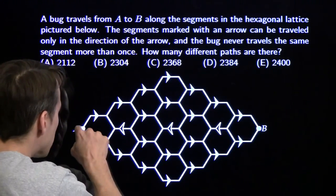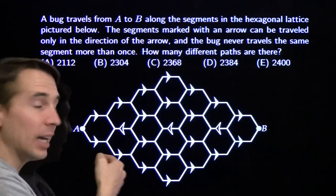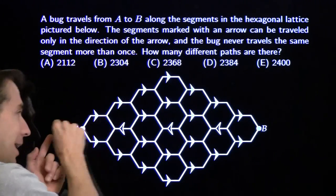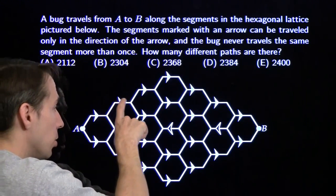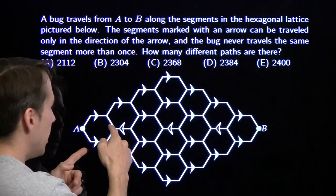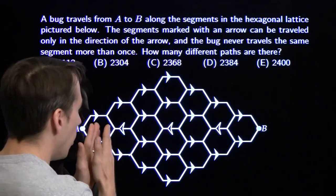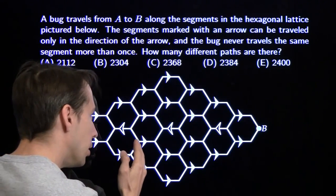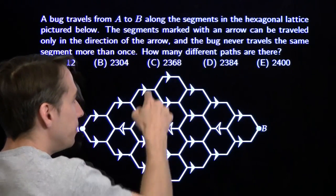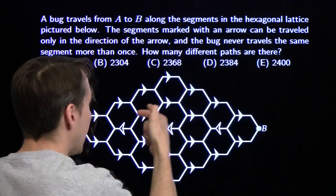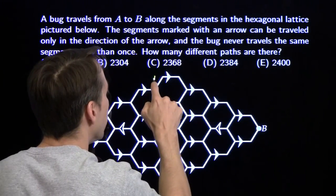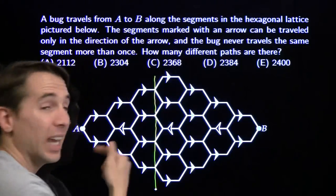Once the bug has left A, it can't go back to A — we can't backtrack along those arrows. So once the bug gets out to that first level, it can't return to A. Now at the next level, the bug can go back, because it can go forward and then backtrack. But at the level after that, the bug can't backtrack at all — it can't go back along any of those four segments. So once the bug gets to that level, it's committed.